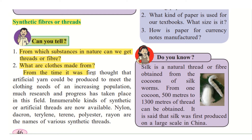From time to time, it was first thought that artificial yarn could be produced to meet the clothing needs of an increasing population. That is, man-made yarn or man-made threads could be produced. Because there is a growing population, all people need clothes. How to get it naturally — how much cotton to make, how much other fibers to make? Therefore, there was a need to produce artificial yarn.